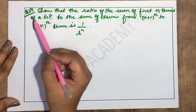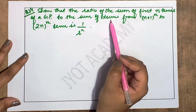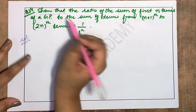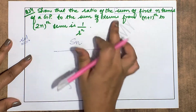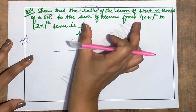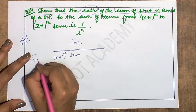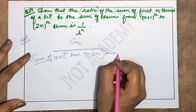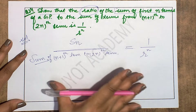Now let's move to Question 24. Show that the ratio of the sum of the first n terms of a geometric progression to the sum of terms from the (n+1)th to the 2nth term is 1/r^n. So we need to show: (sum of first n terms) / (sum of (n+1)th to 2nth term) = 1/r^n.